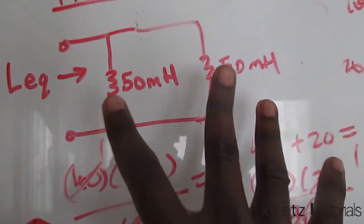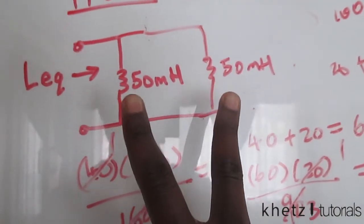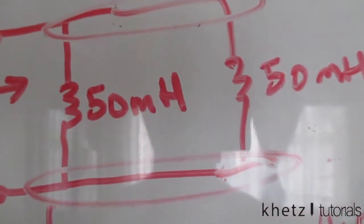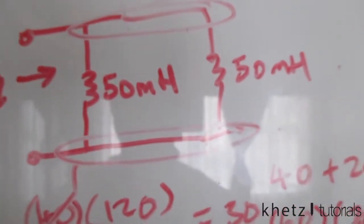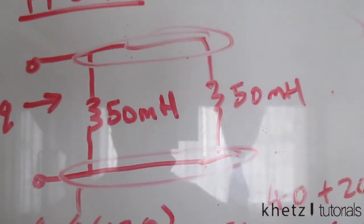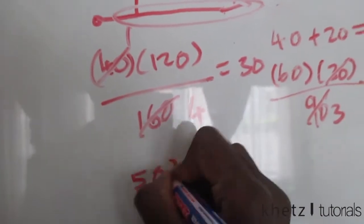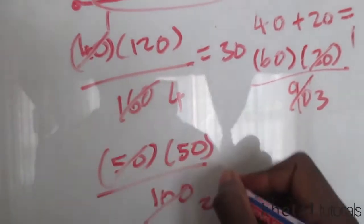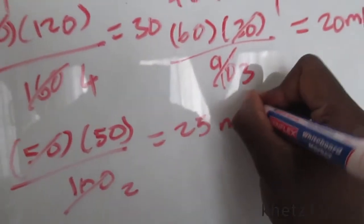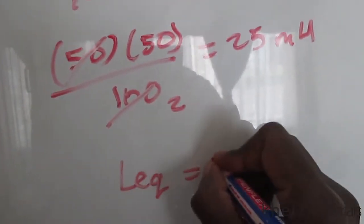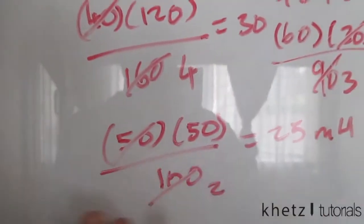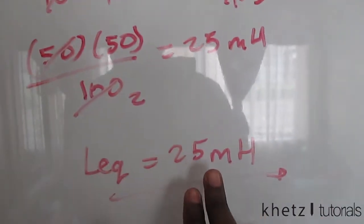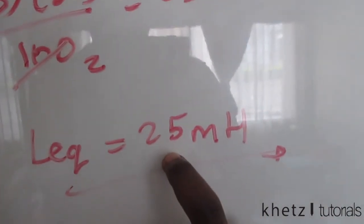Here's a trick: if you have two inductors in parallel with the same value, the result is half of one of the values. This applies to inductors just as it does to resistors. So: 50 multiplied by 50 divided by 50 plus 50, which is 100, gives us 2500 over 100, which is 25 millihenries. The equivalent inductance L_eq is 25 millihenries. If two equal values are in parallel, whether resistors or inductors, the result is simply half of one value.